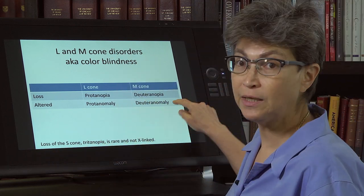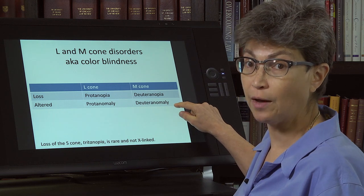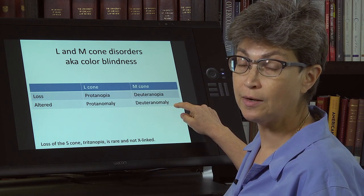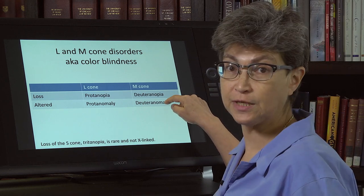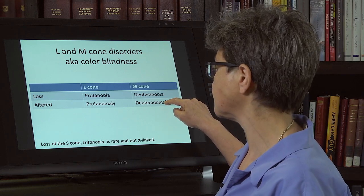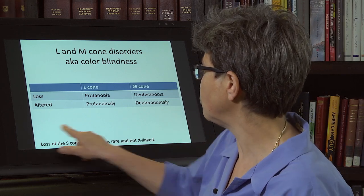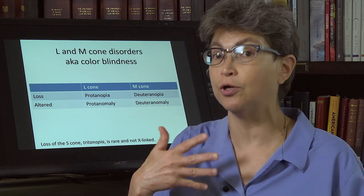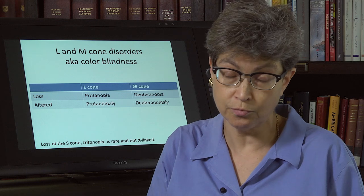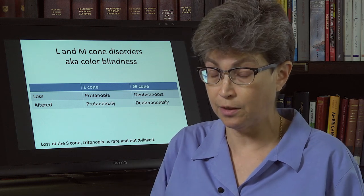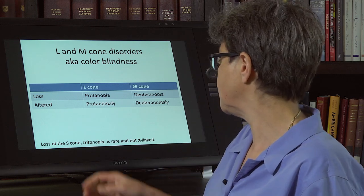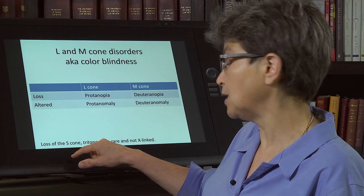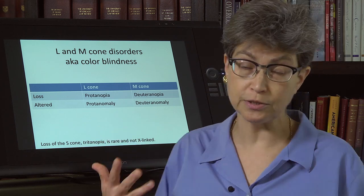This deuteranomaly is the one that is very common. This is the one that affects about 5% of the male population. I should note that the loss of the S cone, the S cone is coded for by a gene on an autosomal chromosome, not a sex-linked chromosome. And so it's not X-linked and it's also very rare.